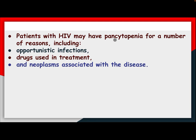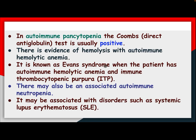Patients with HIV may have pancytopenia for a number of reasons including opportunistic infection, drugs used in treatment, and neoplasms associated with the disease. In autoimmune pancytopenia, the Coombs direct antiglobulin test is usually positive. There is evidence of hemolysis with autoimmune hemolytic anemia. It is known as Evans syndrome when the patient has autoimmune hemolytic anemia and immune thrombocytopenic purpura, and there may also be associated autoimmune neutropenia.